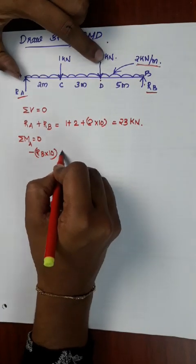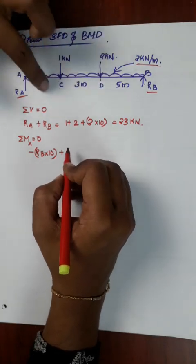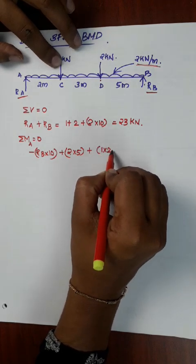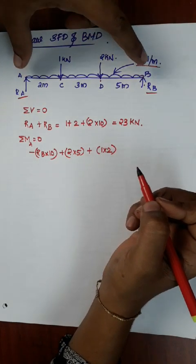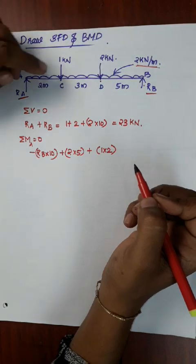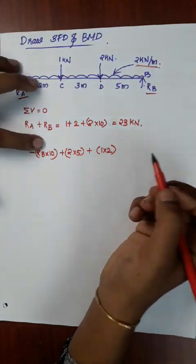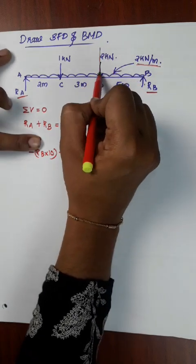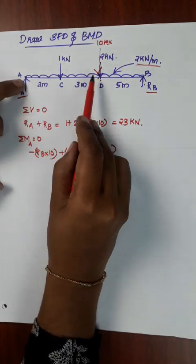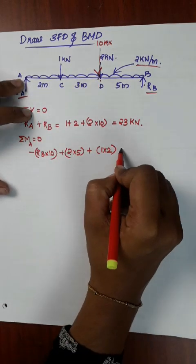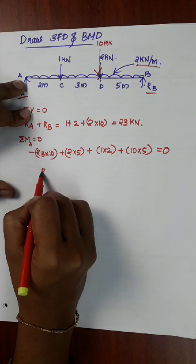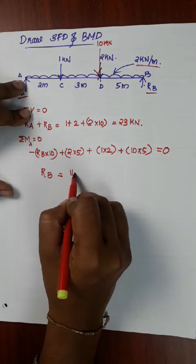For the 2 kN load, the moment is 2 into 5. For the 1 kN point load, it is 1 into 2. The UDL is 2 kN/m over a total distance of 10m, so the total UDL force is 10 kN acting at the center. The moment from UDL is 10 into 5. Solving these, RB equals 11.2 kN.